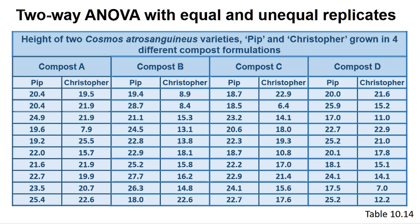For example, Table 10.14 gives the fresh weight of two varieties of Cosmos atrosanguineus, called Pip and Christopher, grown in one of four types of compost, eight weeks post-weaning from a tissue culture environment. The questions we can ask are whether any of the composts promote superior height growth of the Cosmos variety in general, whether either variety is more successful in making the transition from tissue culture to the greenhouse as measured by height, and finally, do the two varieties do better on different composts? This last question asks if an interaction occurs between variety and compost type.